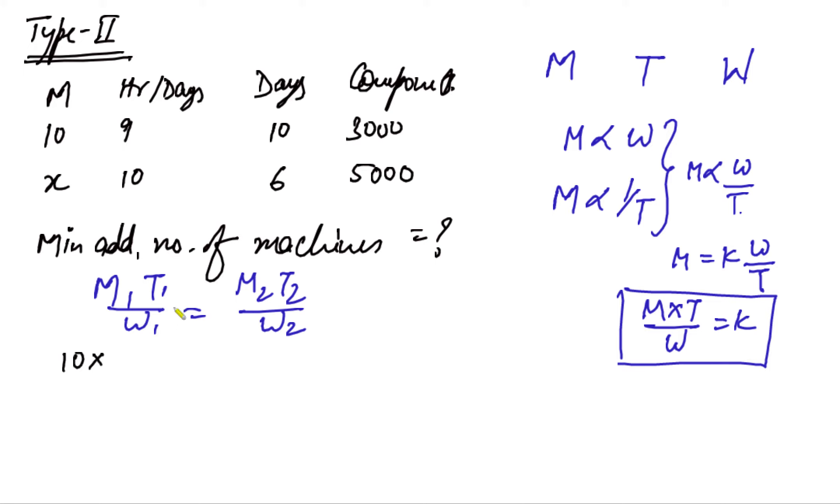The time was 9 hours a day for 10 days, that means in total 90 hours, and the work in the first case was 3000 components. Whereas in the second case, we have to calculate the value of X, which is the manpower. The amount of time is 10 times 6, that is 60 hours, and the total work is 5000.